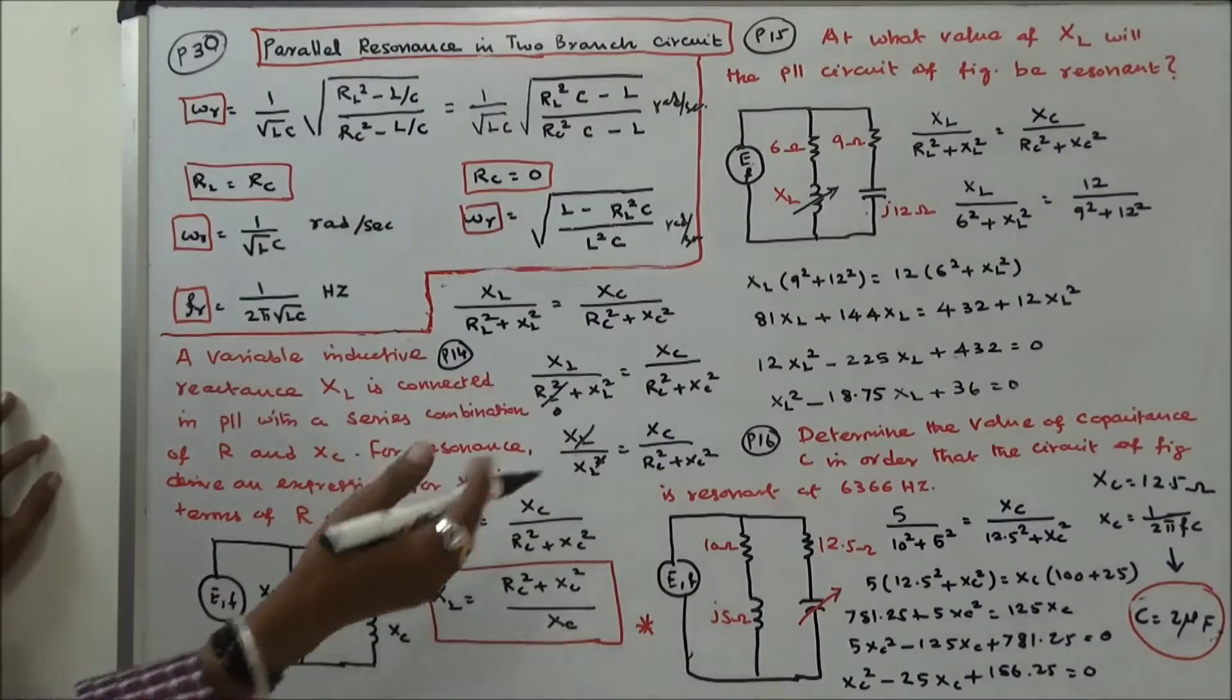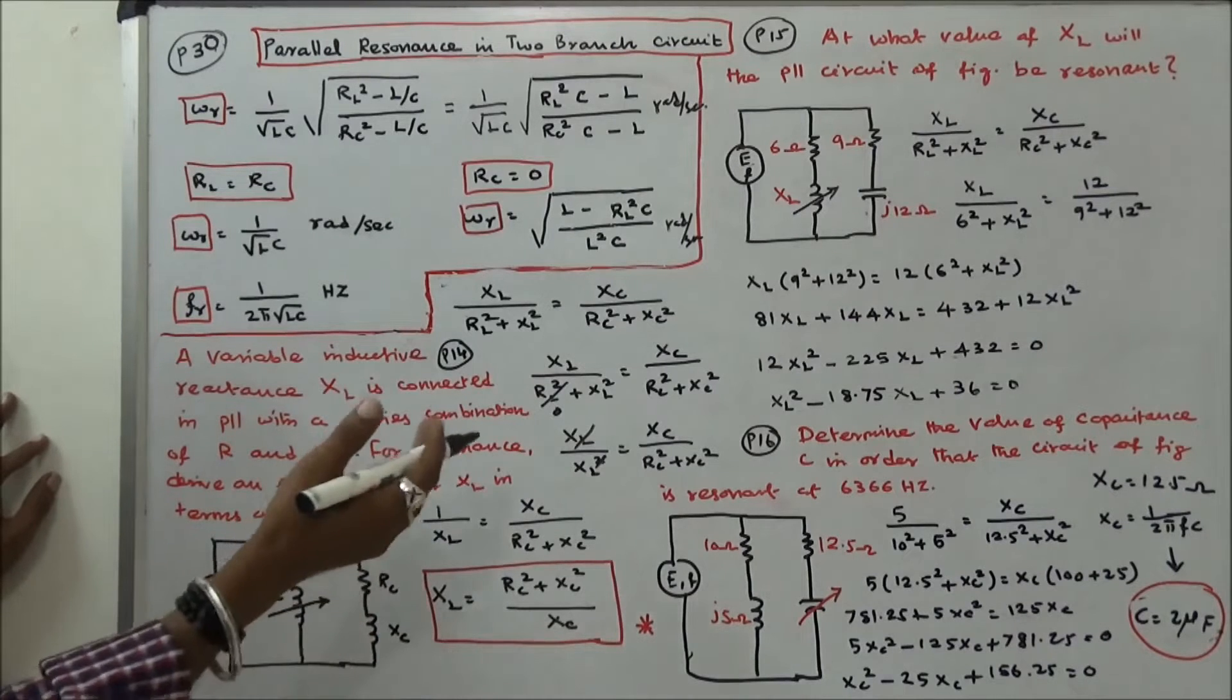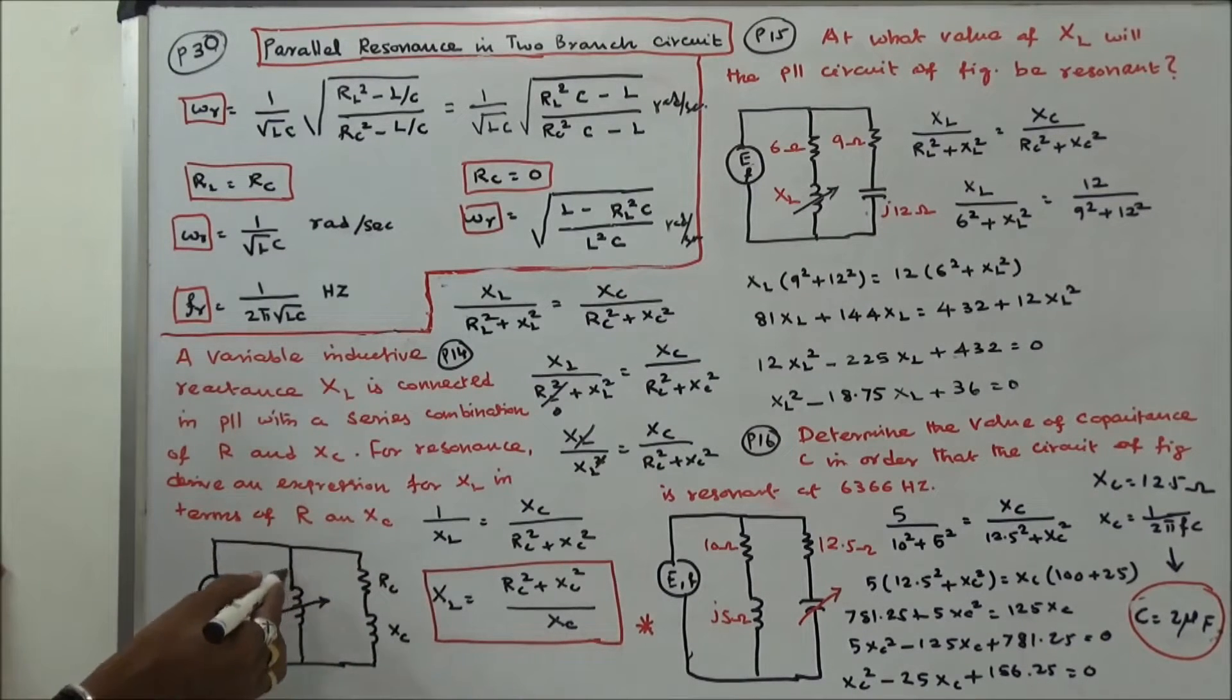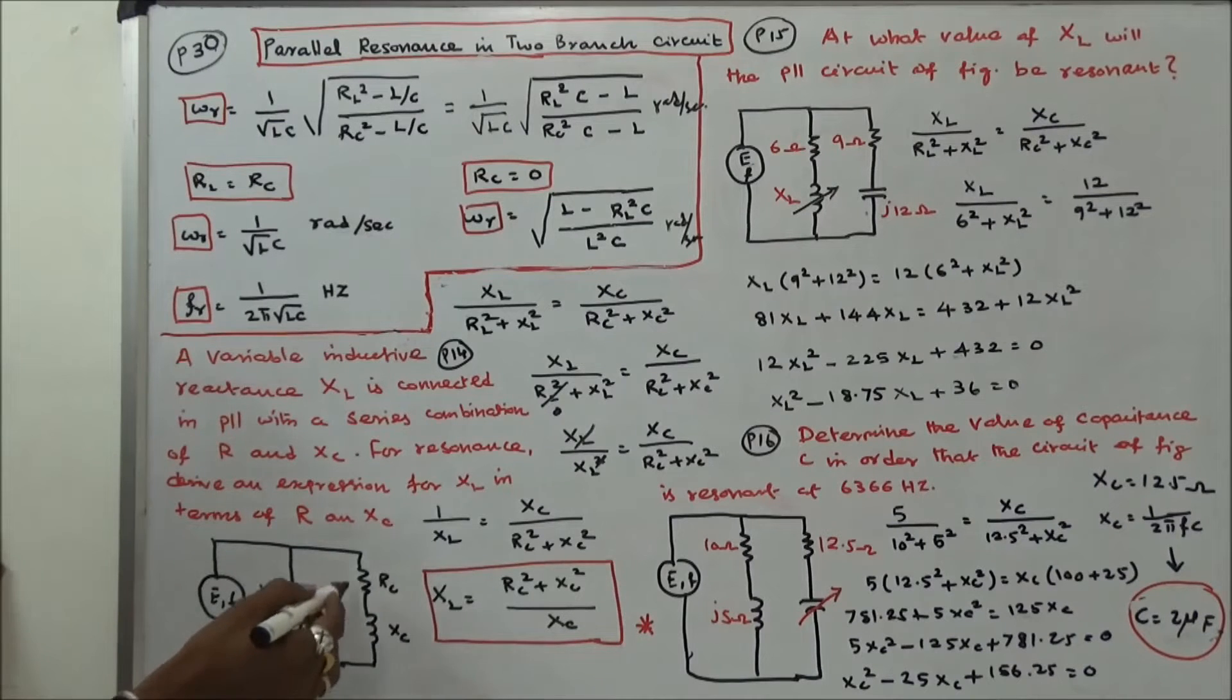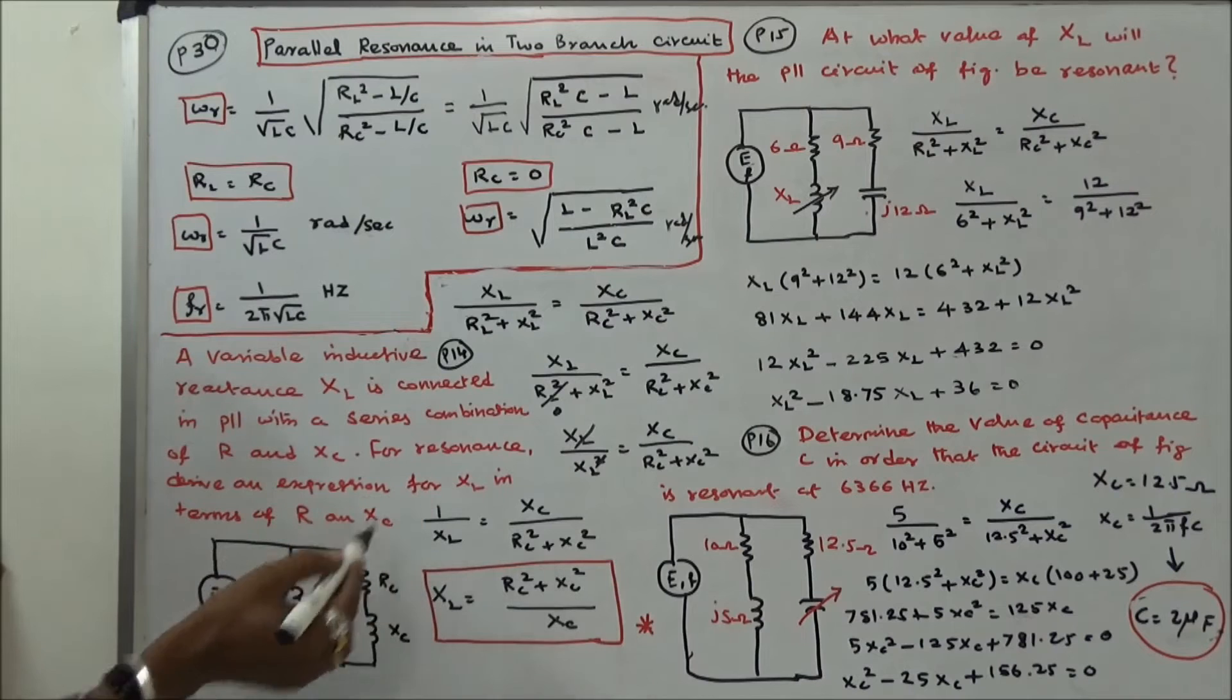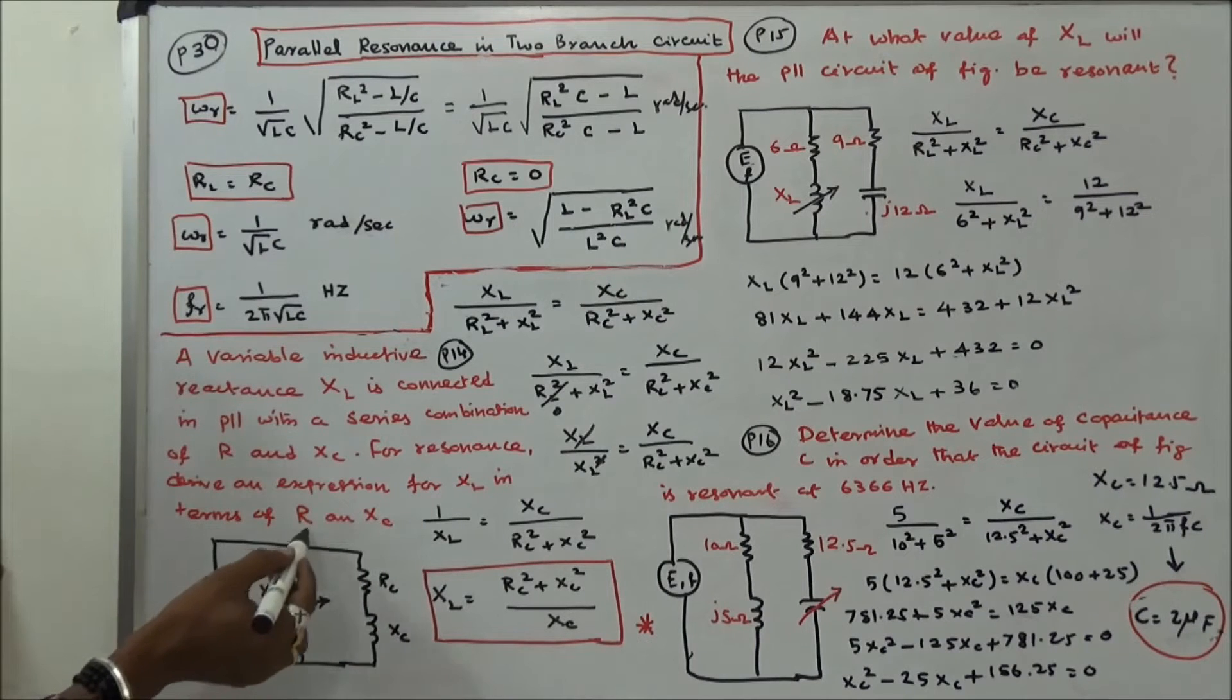This last we work about five problems. The first problem: a variable inductive reactance is connected in parallel with the series combination of R and Xe. For resonance, derive an expression for Xl in terms of R and Xe.